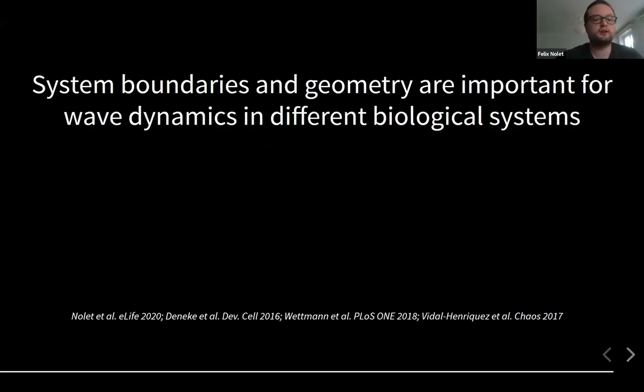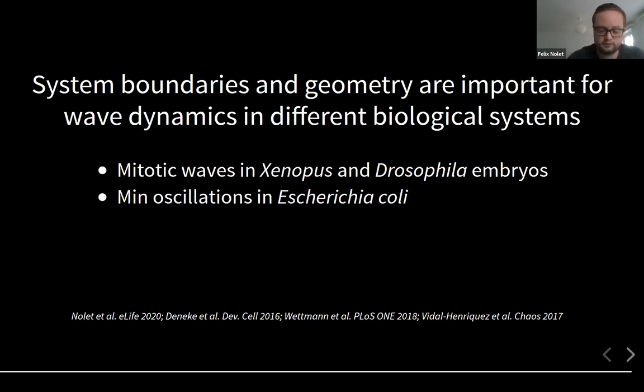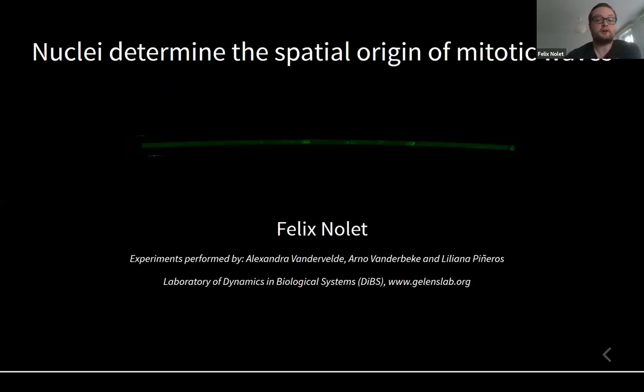Furthermore, in more general systems, boundaries and system geometry can be important for the wave dynamics in different biological systems, not only mitotic waves in Xenopus and Drosophila embryos, but also oscillations of the min protein in the bacteria E. coli. This min protein is important for determining where the cell divides. It has shown that system boundaries or geometry can be important for these waves. Also cyclic AMP waves, which we will hear more about today in the slime mold Dictyostelium, also depend on the system boundaries. You can read more in the references below. Thank you very much for listening today.